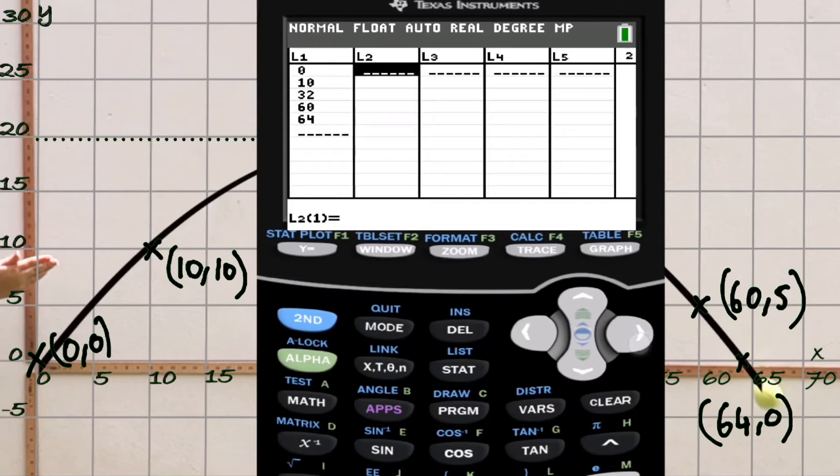For the y values: we had (0, 0) so we add 0 there. It was (10, 10), so that's good. Then 32 was with 20, 60 was 5, and 64 was at 0. Now that list one and list two are complete, we want to find the quadratic regression.